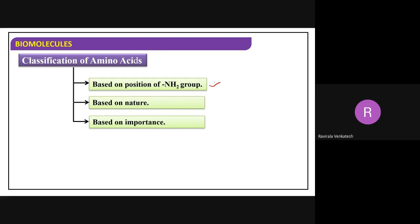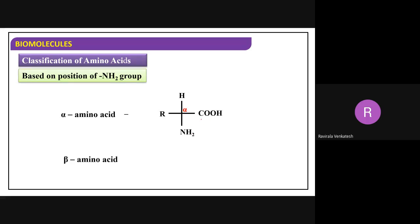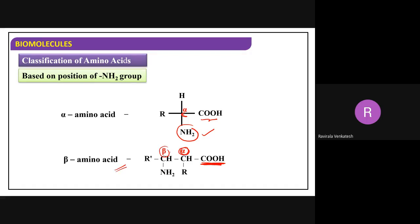First classification: based on the position of the NH2 group. If the NH2 group is present on the alpha carbon, they are alpha amino acids. If it is present on the beta carbon, they are beta amino acids. The carboxylic group is the functional group, the carbon adjacent to it is the alpha carbon, and the next one is the beta carbon.